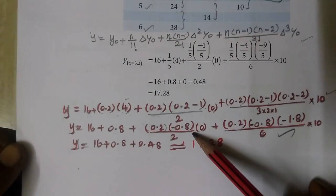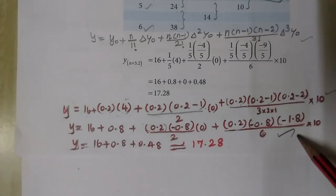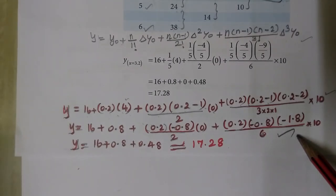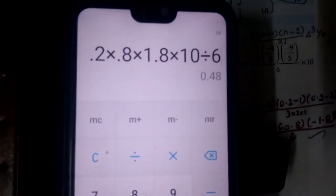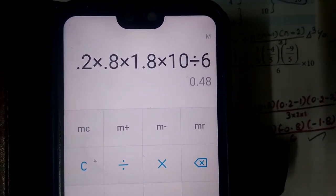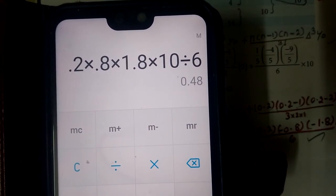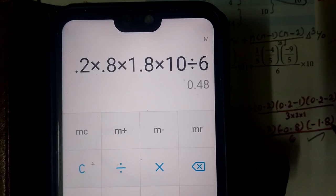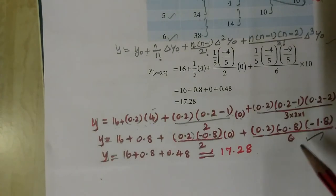So: 16 plus 0.8. Then 0.2 times 0.8 times 1.8 times 10 divided by 6. The calculation gives 0.48. So adding the terms together, you approximately get 17.28 as the result.